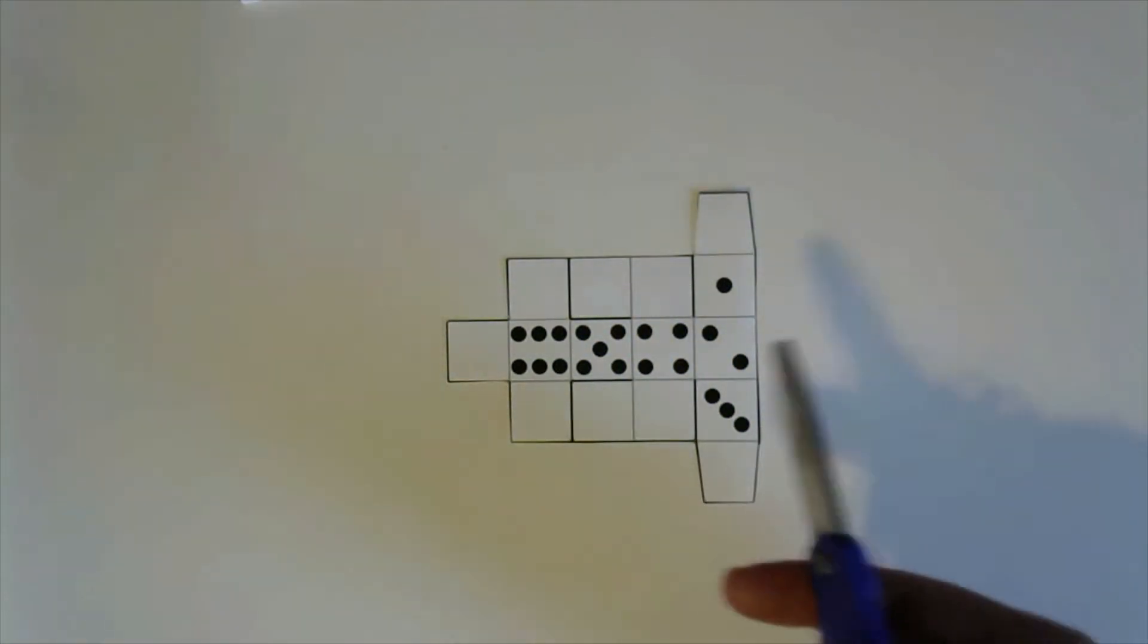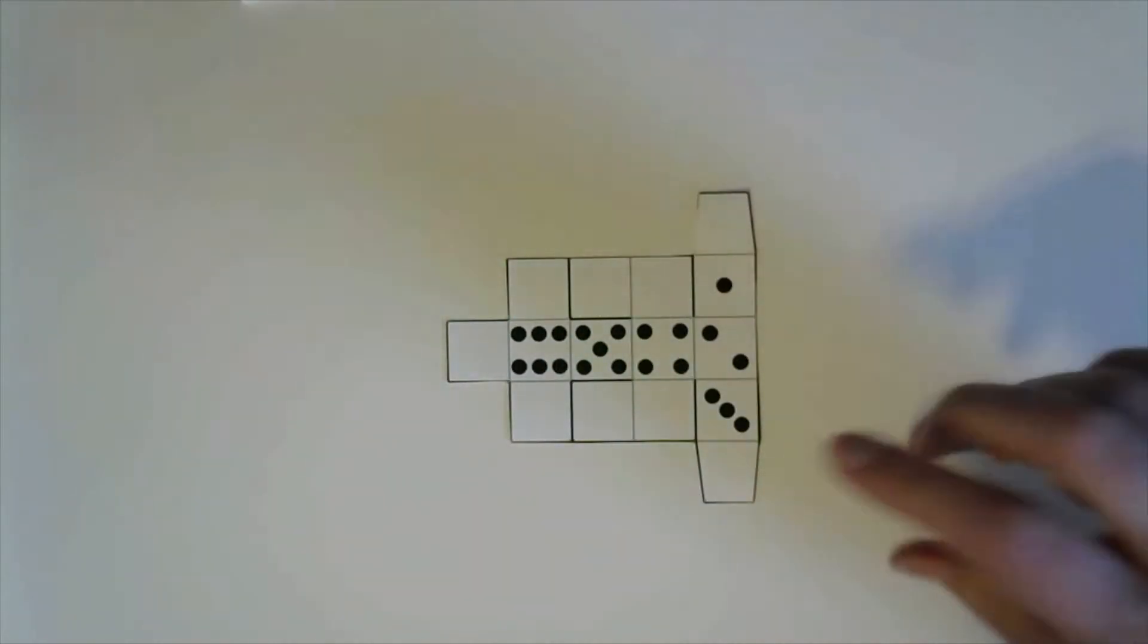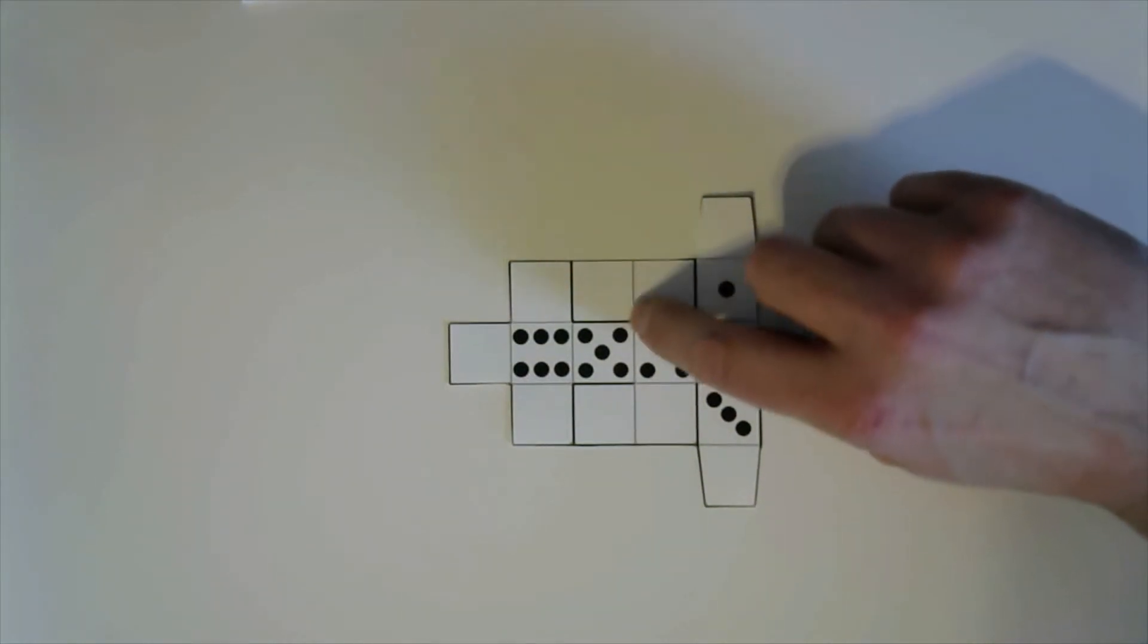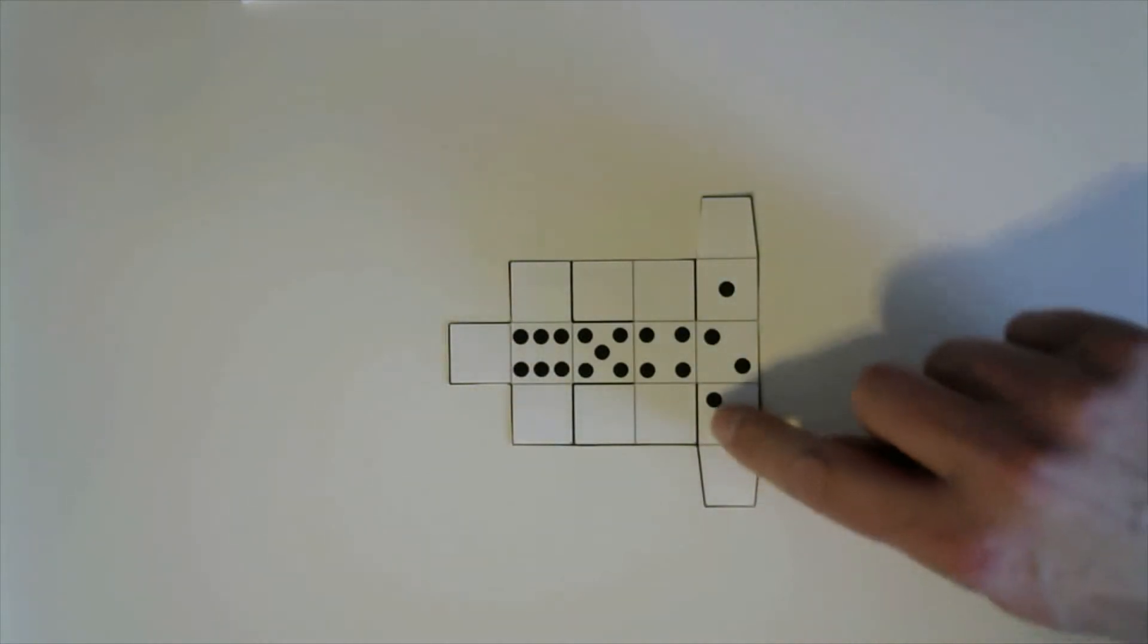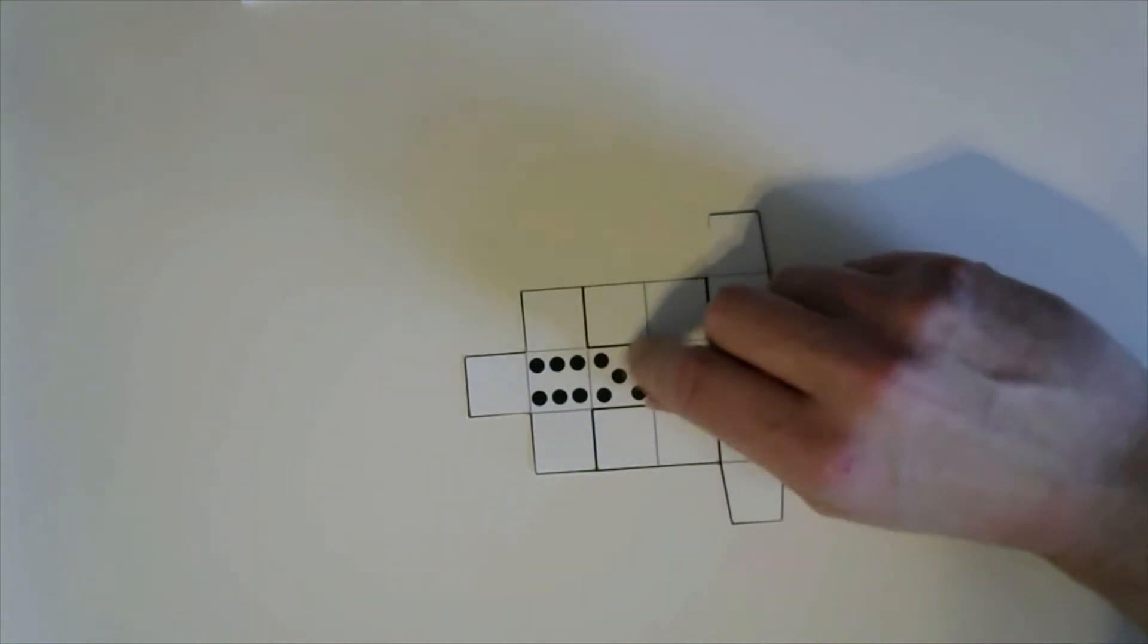You cut out the template around the edges, and then you have to make a few extra cuts. I've made everywhere you need to cut thicker solid lines, as opposed to the ones you're just going to fold, which are thinner lines. So you cut around the border, and then you also have to cut here and here, and these L-shaped cuts here.